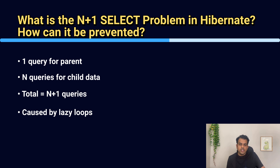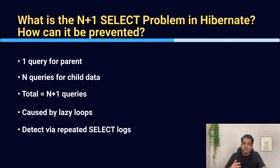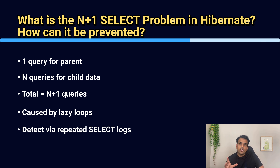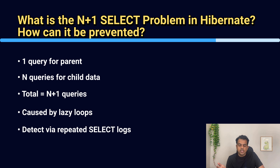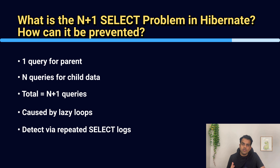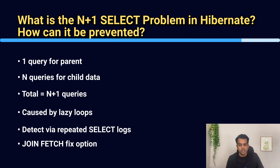In the interview, mention that you usually enable SQL logs in a lower environment and look for repeated or similar SELECT queries while iterating over collections. To prevent the N+1 select problem, there are multiple techniques. First and foremost, use JOIN FETCH either in HQL or JPQL. Another way is using Entity Graph, which is a JPA feature. If you use Entity Graph, the N+1 select problem won't occur. The third option is using batch loading with the @BatchSize annotation to load all queries in a batch.